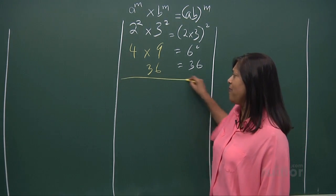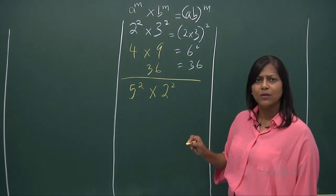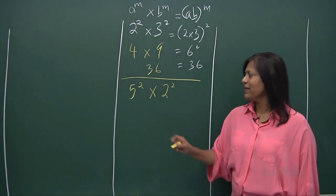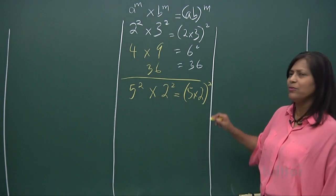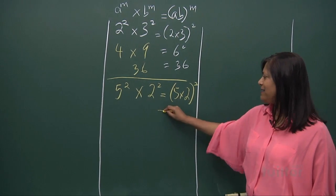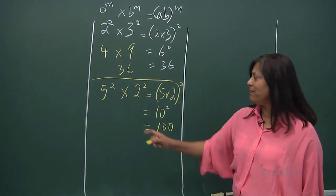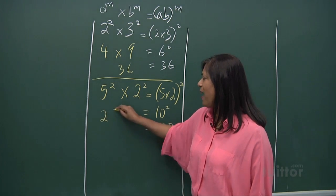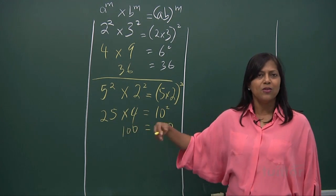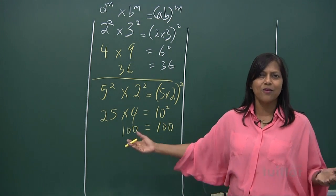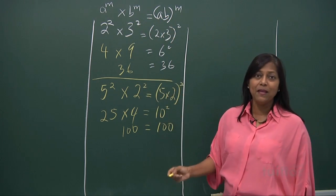Ask yourself a little more. For example, if I have 5 to the power of 2 times 2 to the power of 2, what do you get applying the laws of indices? The powers are the same, so you can write it as (5 times 2) to the power of 2, which is 10 squared, equal to 100. And verifying: 5 squared is 25, 2 squared is 4, and 25 times 4 is 100. Your left-hand side and right-hand side balance. So the law is: a^m times b^m equals (ab) to the power of m.